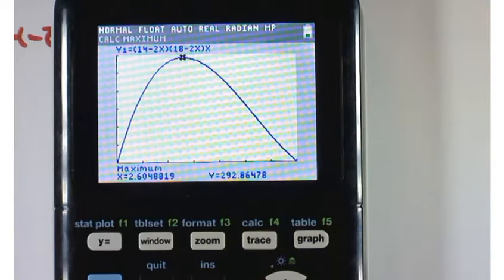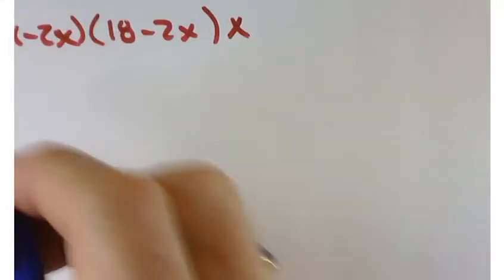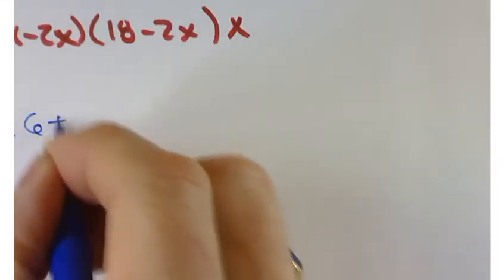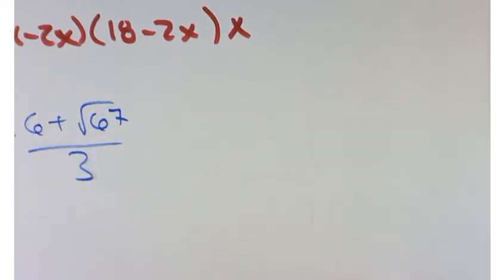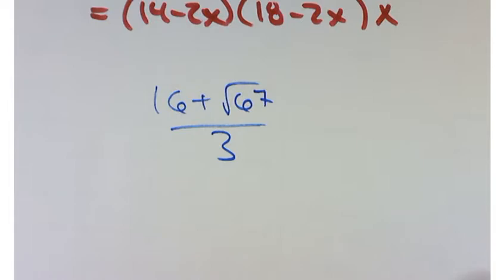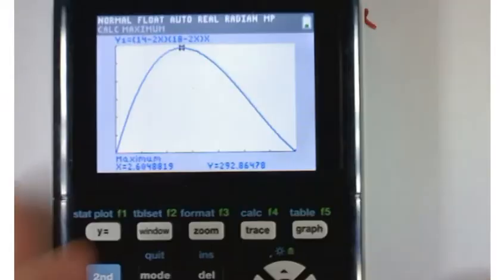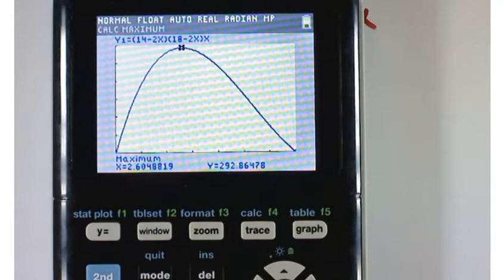Were you able to get that? When you take your calculus class you'll find out that I think that's 16 plus the square root of 67 over 3. But we don't have to worry about that. What you should worry about is being able to graph, being able to find minimums and maximums and use the table. Those are the important things that you should get out of this.